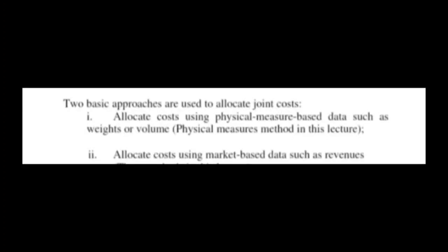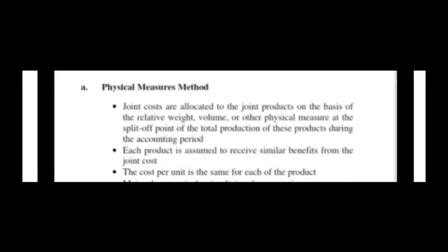There are two approaches to allocating joint cost: number one is to allocate the cost on a physical basis, and number two is to allocate the cost on a market basis. The first method is the physical measure method, where joint cost is allocated based on relative weight, volume, or other physical measures at the split-off point. Each product is assumed to receive similar benefits from the joint cost, and the cost per unit is the same for each product.